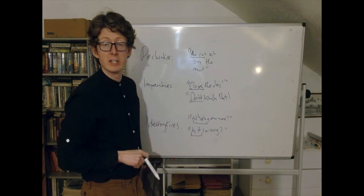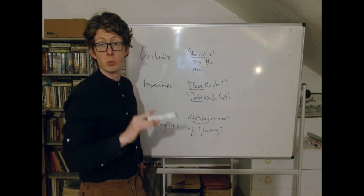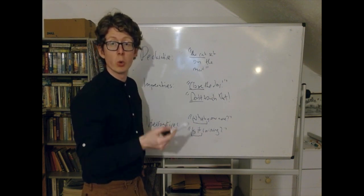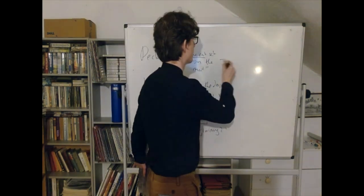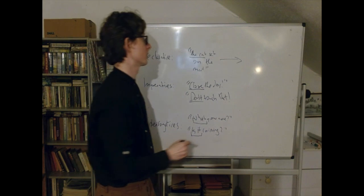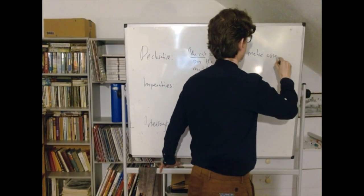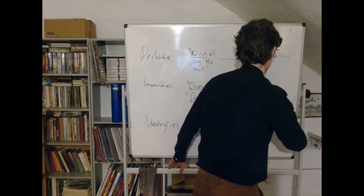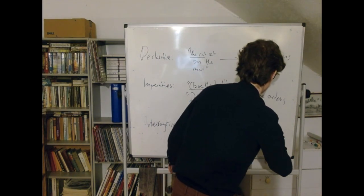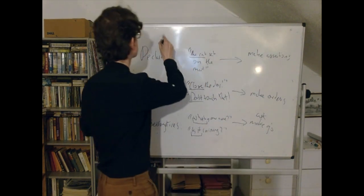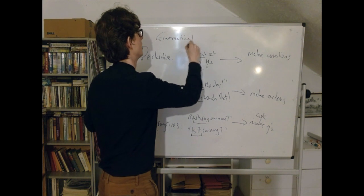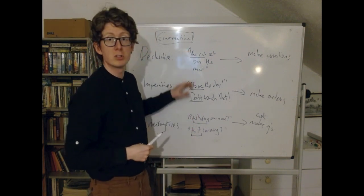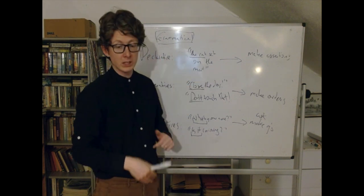So these sentences are all grammatically quite different. Even before we focus on what they mean or what they're used to do, we can see differences in their grammar. The grammatical view says that the difference in grammar is basically coordinated with a different kind of thing each sentence is used to do. Declaratives are used to make assertions or claims; imperatives are used to make orders; and interrogatives are used to ask questions. This is what we call the grammatical view.